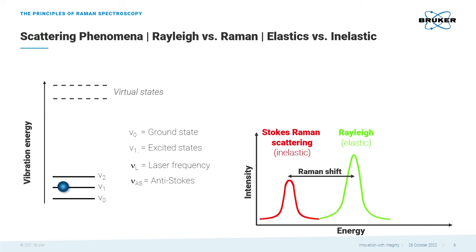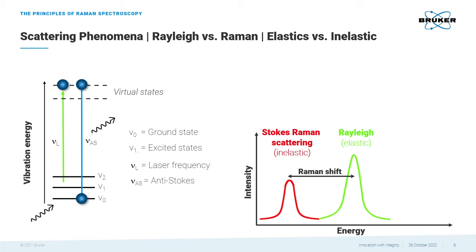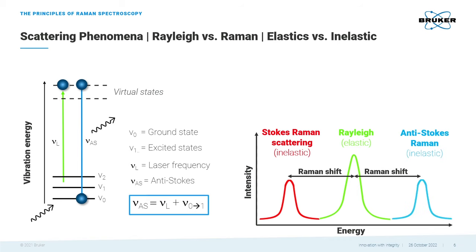But wait, there is more: the anti-Stokes scattering. In this case, the laser frequency excites the molecule from an already excited state into a virtual state. When the molecule falls back to the ground state, the scattered light has more energy than the incident light, creating anti-Stokes scattering.